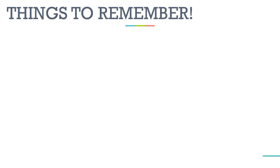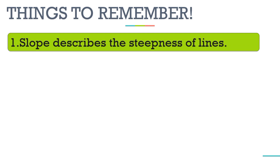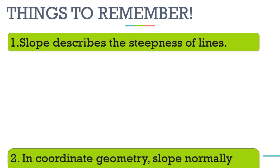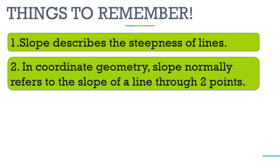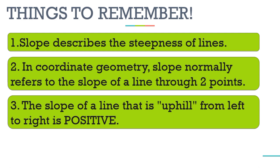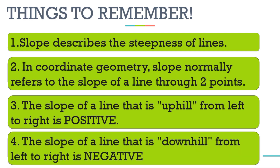Here are things to remember. First, slope describes the steepness of lines. Second, in coordinate geometry, slope normally refers to the slope of a line through two points. Third, the slope of a line that is uphill from left to right is positive — uphill means going up, therefore the slope is positive. Fourth, the slope of a line that is downhill from left to right is negative — downhill means the slope is negative.